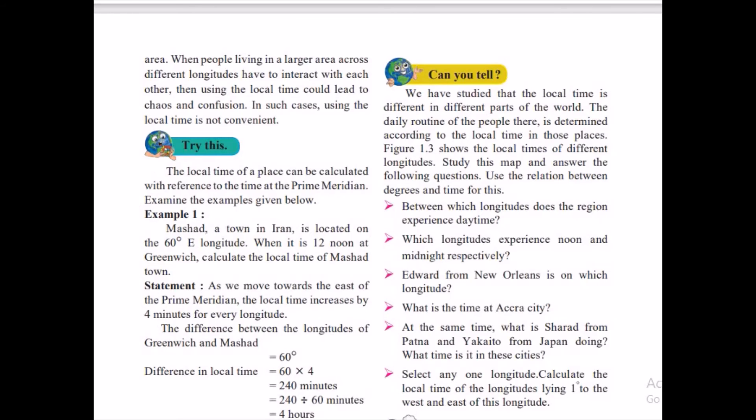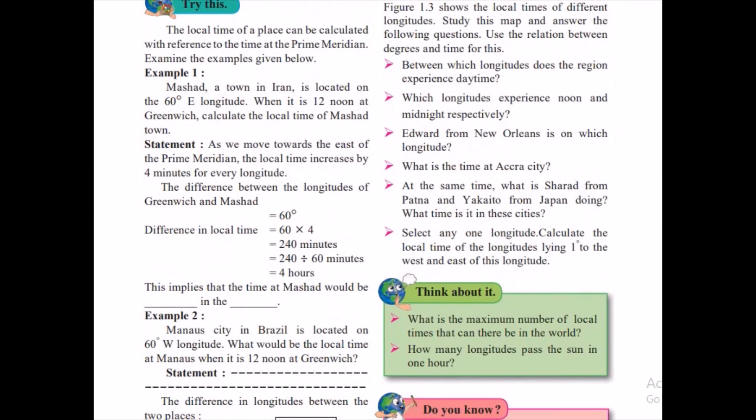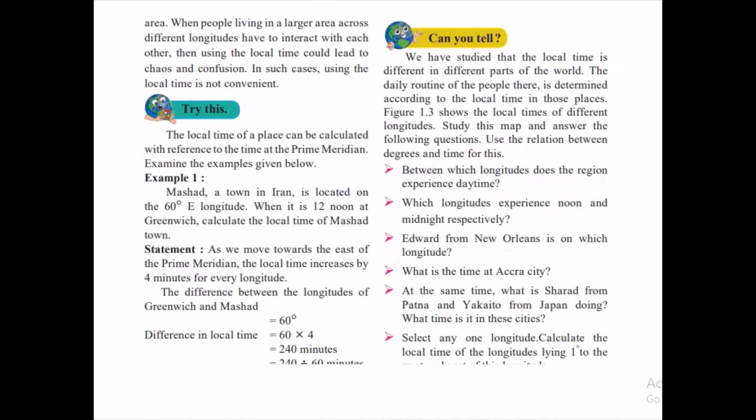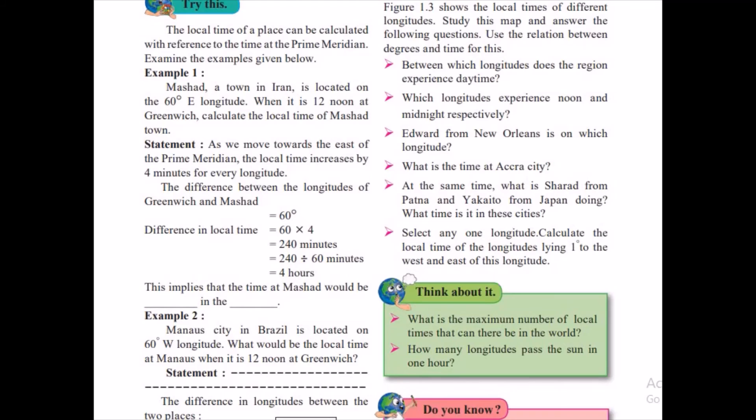So we find that if we say according to our local time, there will be a confusion. So how do we decide the local time? We decide the time, that is the difference of local time. You know, to pass one degree it requires four minutes.